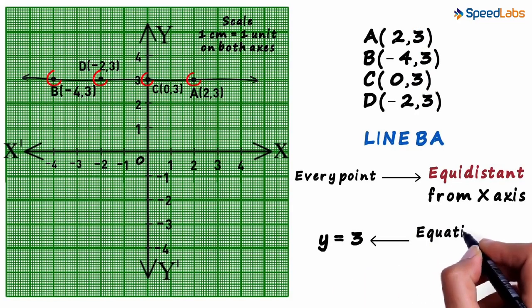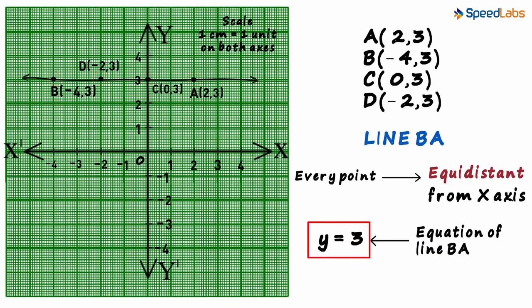So y is equal to 3 for each of the points on the line BA. This is called the equation of line BA. And the fact that the y value remains constant tells you that the line is parallel to x axis.